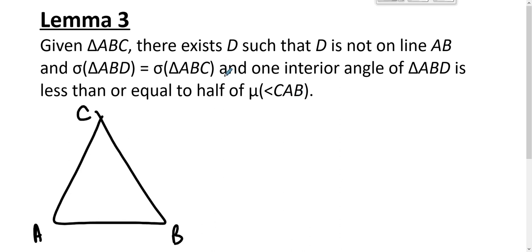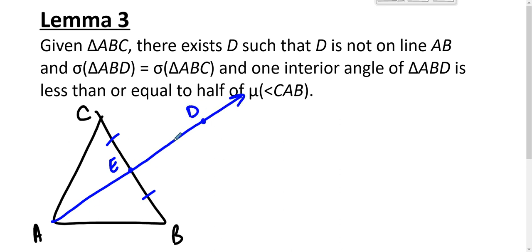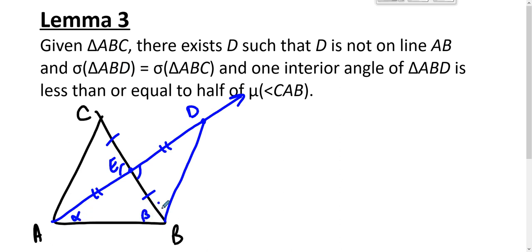We create a triangle with the same angle sum but a special property. Construct the midpoint of CB, draw a ray from A through it, and find a point D along that ray such that those two segments are congruent — the ruler postulate lets us do that. The claim is that this D is the D the lemma refers to. We have vertical angles here, so triangle AEC is congruent to triangle DEB.